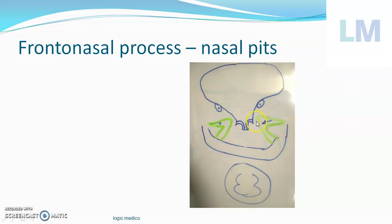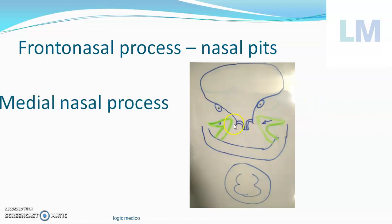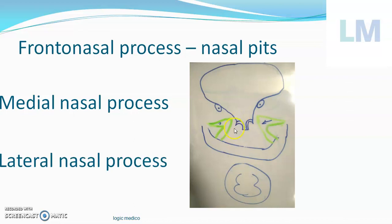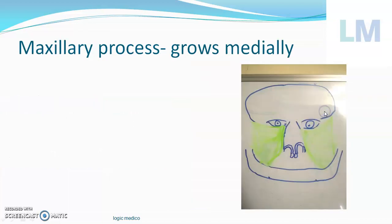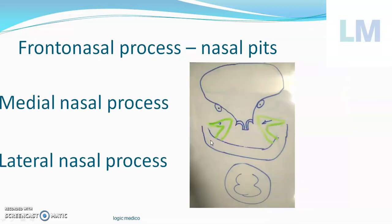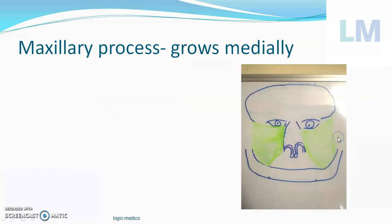As the maxillary process grows medially and narrows the frontonasal process, with the formation of nasal pits, two projections appear on either side: medially the medial nasal process and laterally the lateral nasal process. The frontonasal process is renamed in its lower part as medial and lateral nasal processes. The maxillary process brings the eyeball from a lateral orientation toward the anterior plane. The mandibular processes unite with one another, separating the stomatodium from the pericardial bulge.